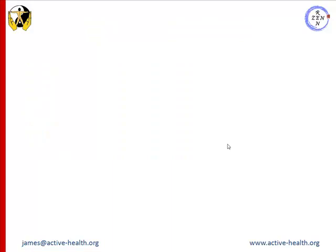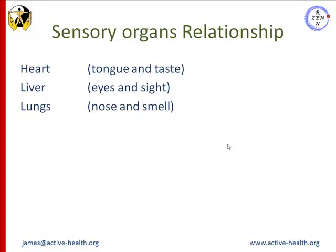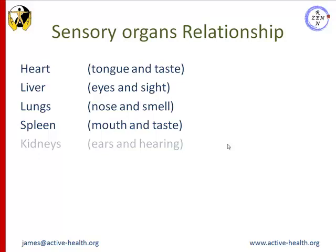The health and well-being of sensory organs rely on the care and nourishment of their corresponding Zang Fu. The heart controls the tongue and taste. The liver controls the eyes and sight. The lungs control the nose and smell. The spleen controls the mouth and taste. And the kidneys control the ears and hearing.